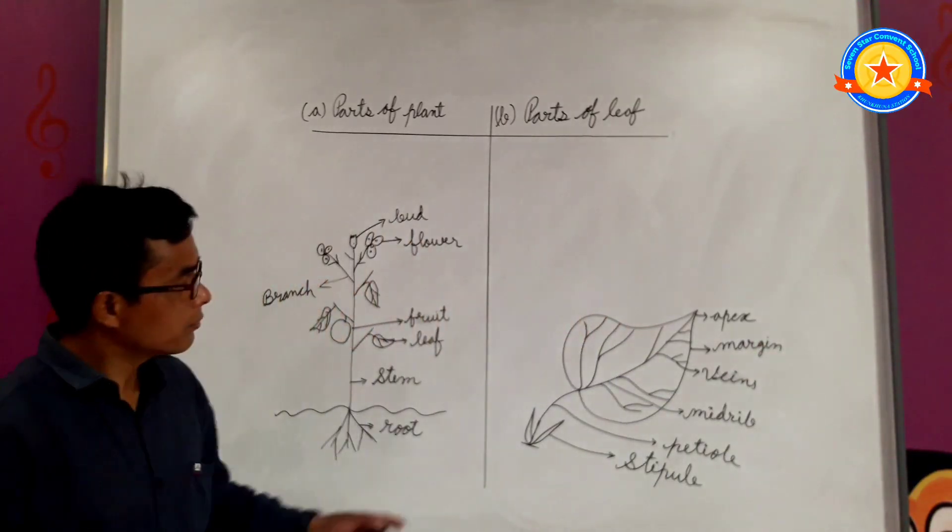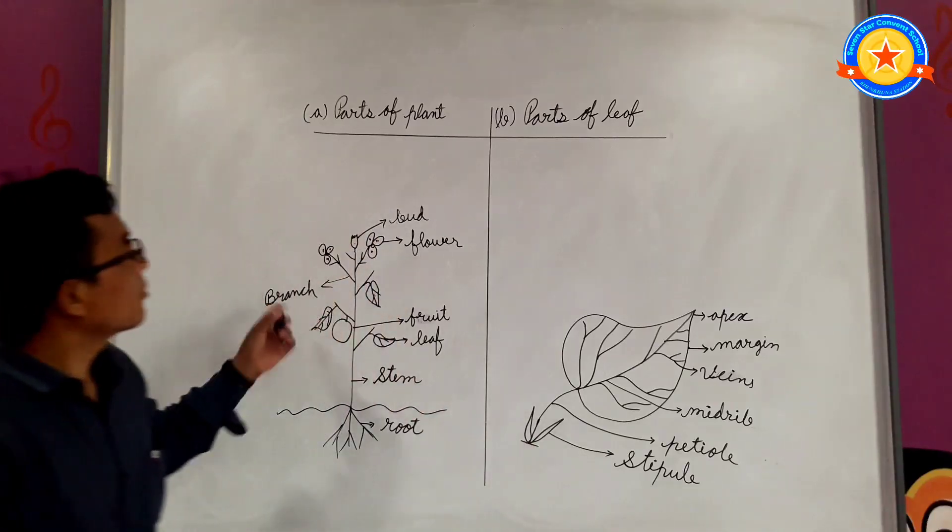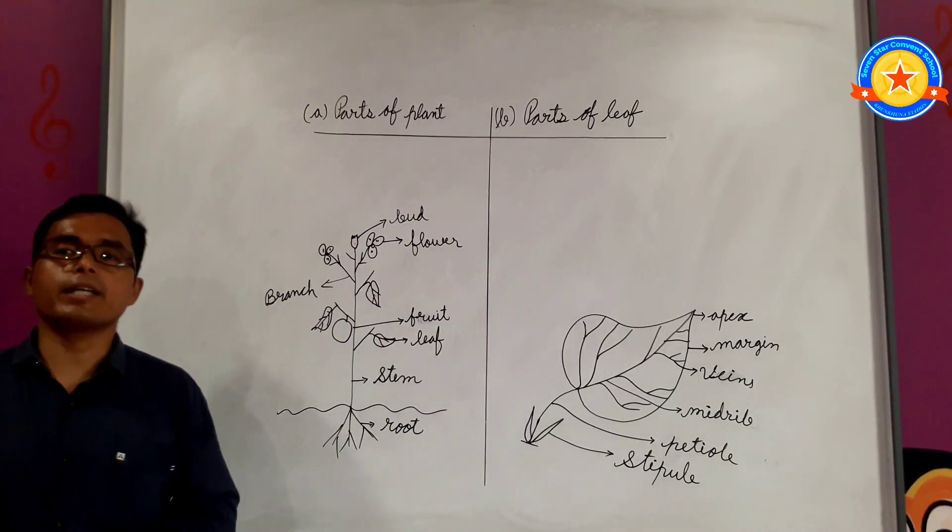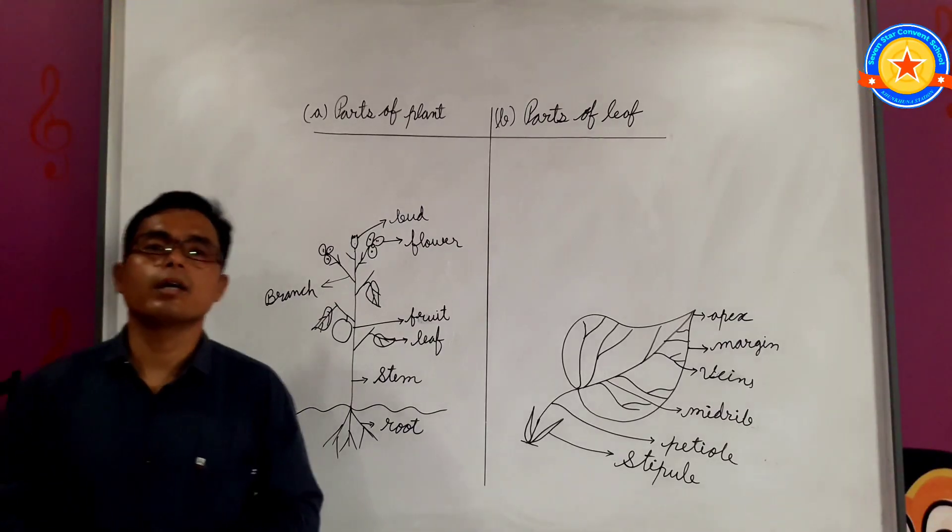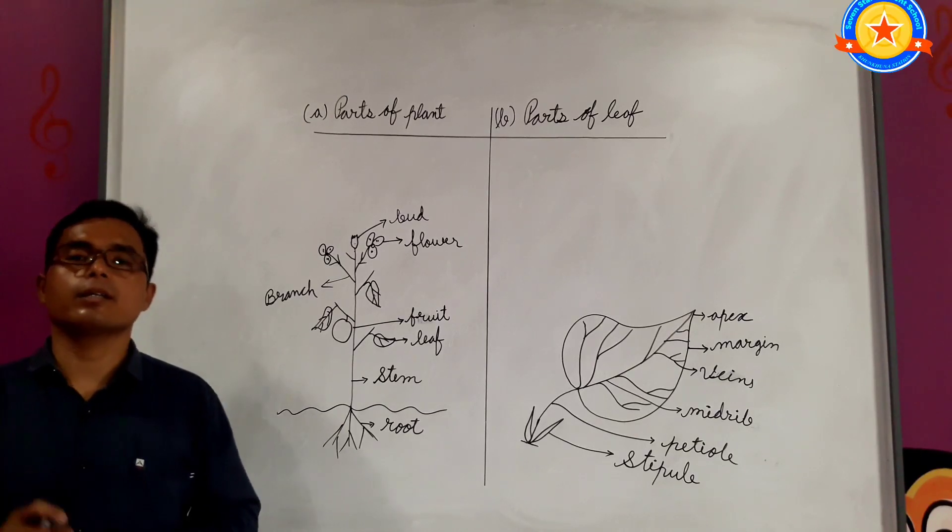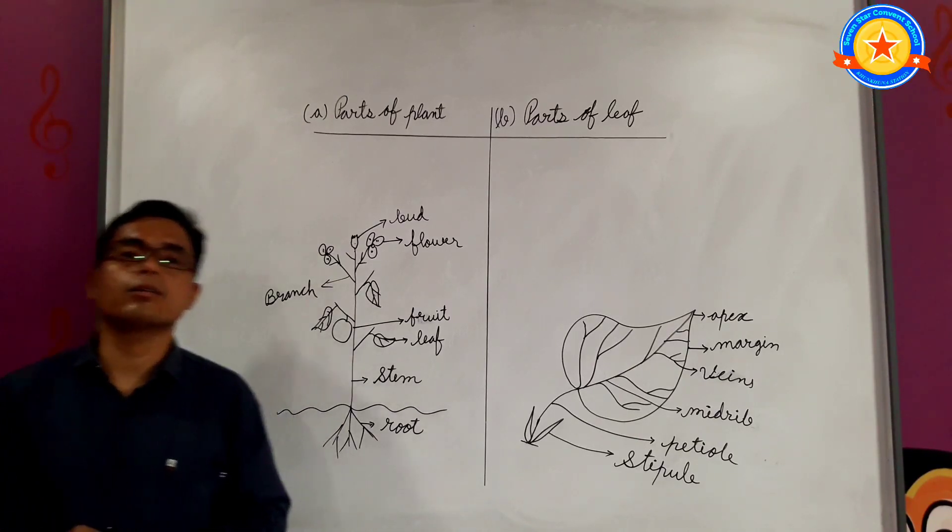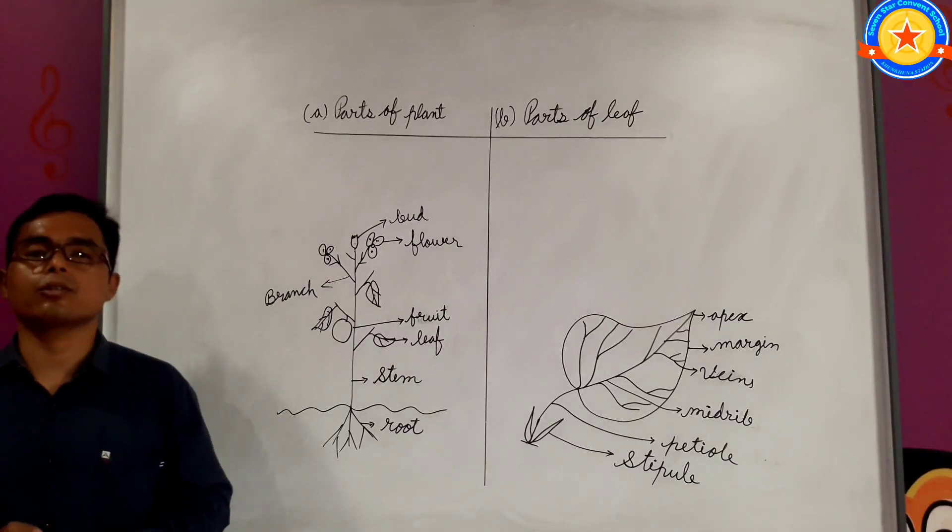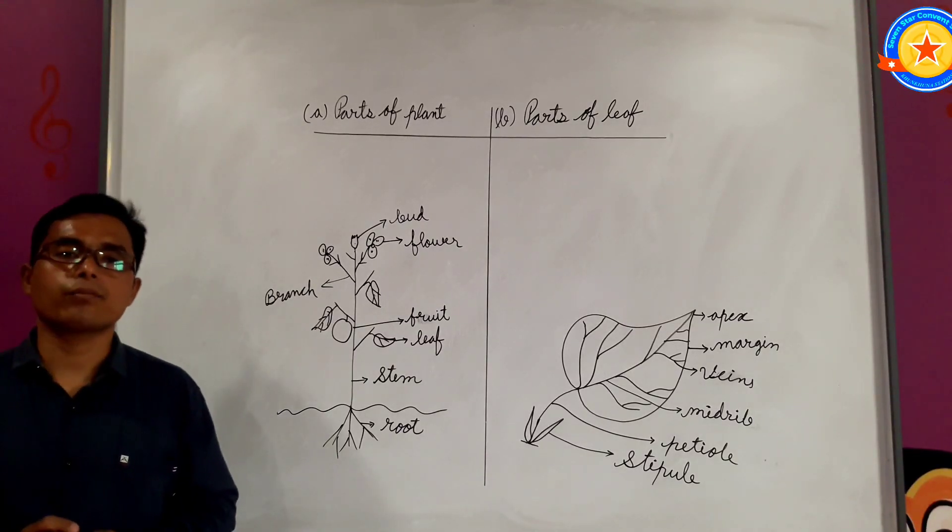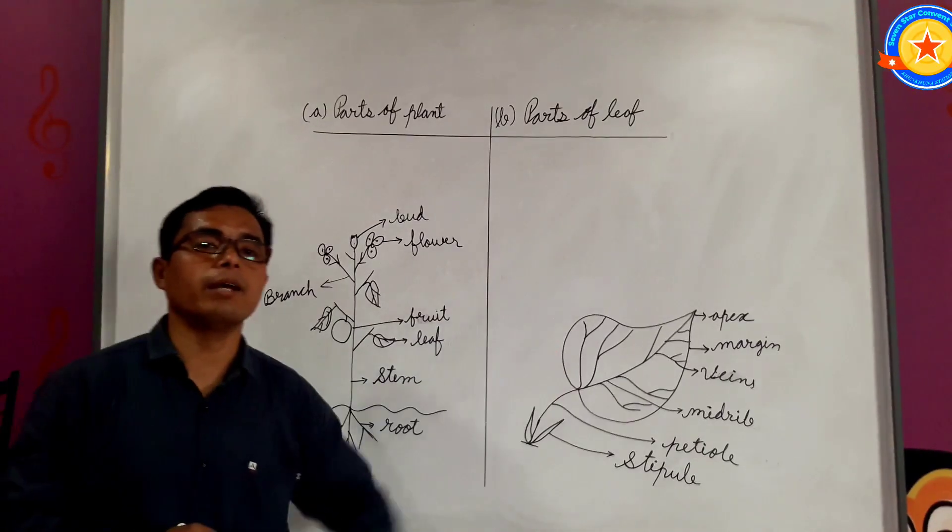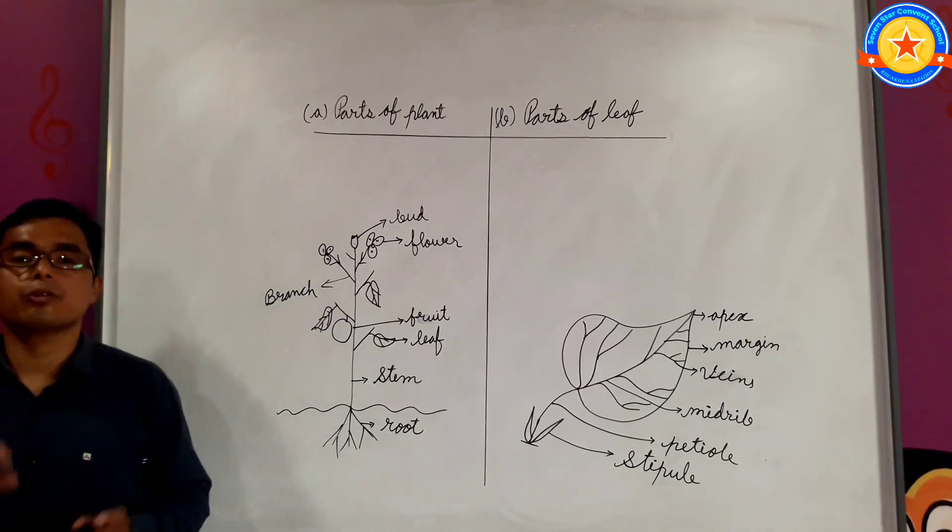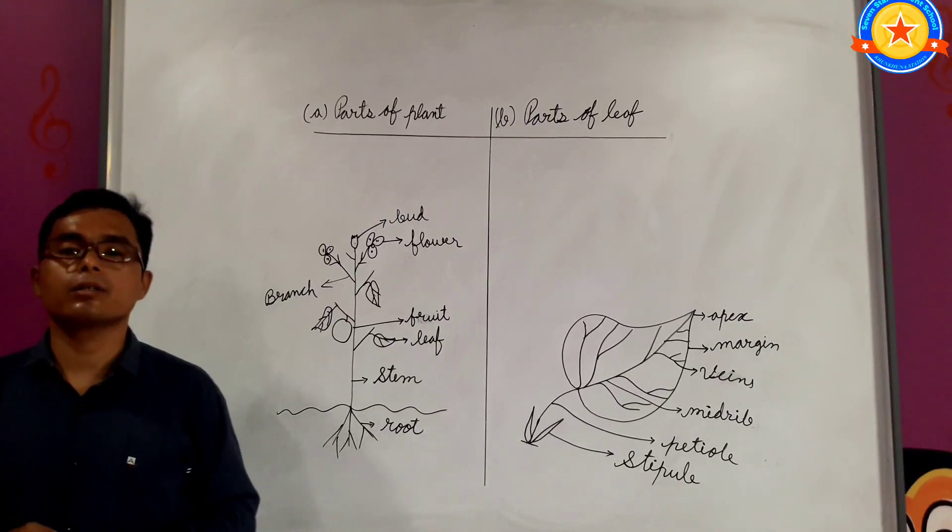Now everyone, what is a plant? A living thing that grows in the ground and usually has leaves, a stem, and roots. This is called a plant. And what is meant by leaf? One of the flat, usually green parts of a plant or tree. I hope you have understood.